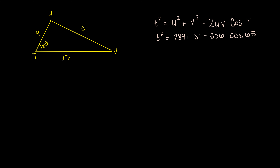This next step I'm going to plug into a calculator. So t squared equals 240.68. Again, I just want to solve for t, so I'm going to take the square root. Technically I should take plus or minus, but we're talking about a length here — we're in a quadrant where the length is positive — so we don't have the ambiguity. And we get t to roughly be equal to 15.5.